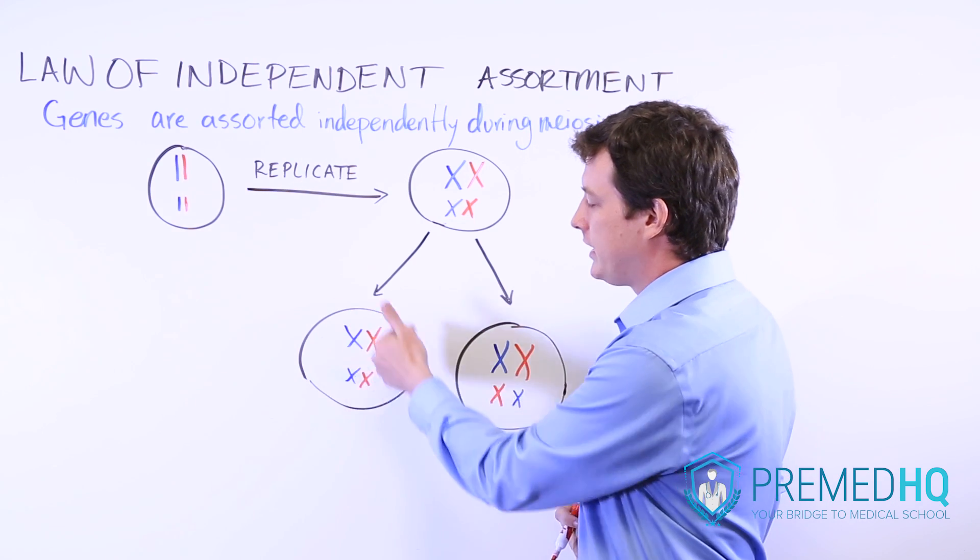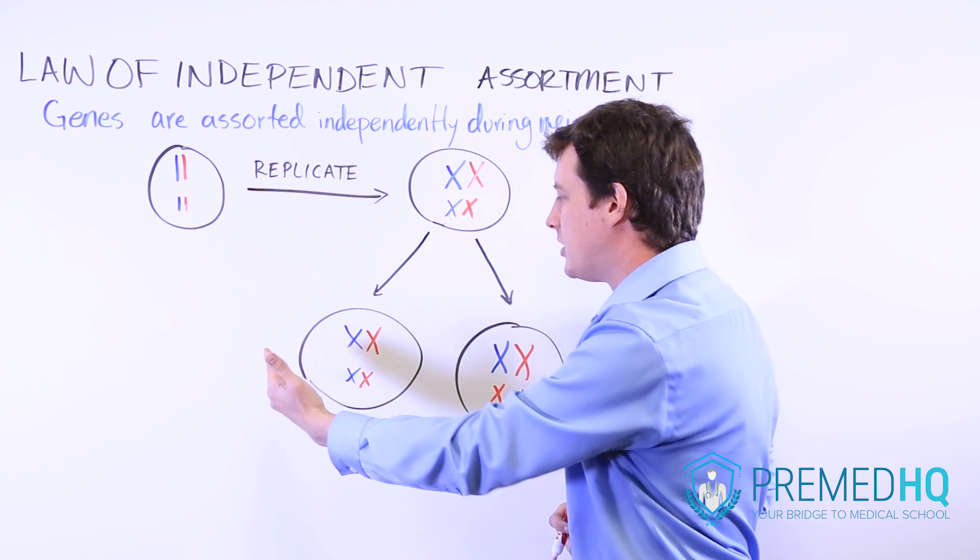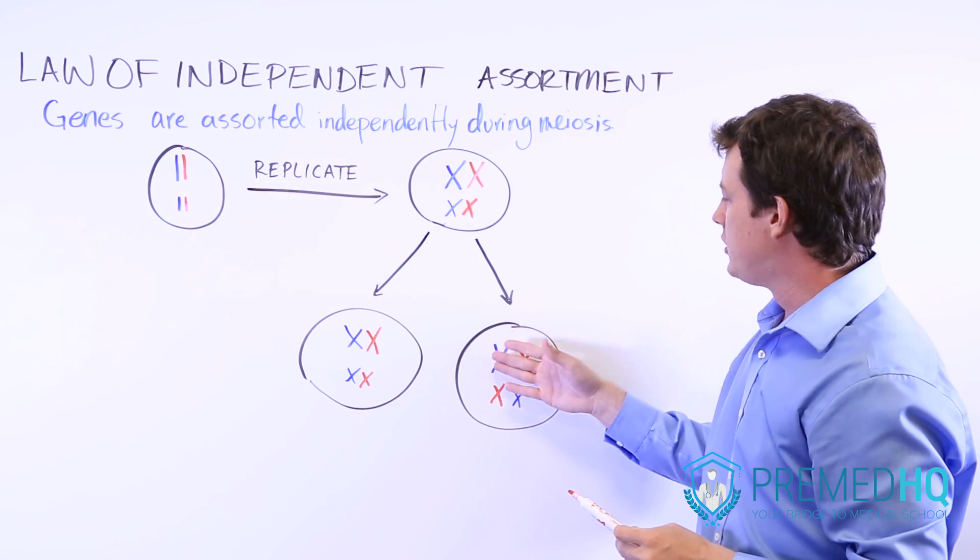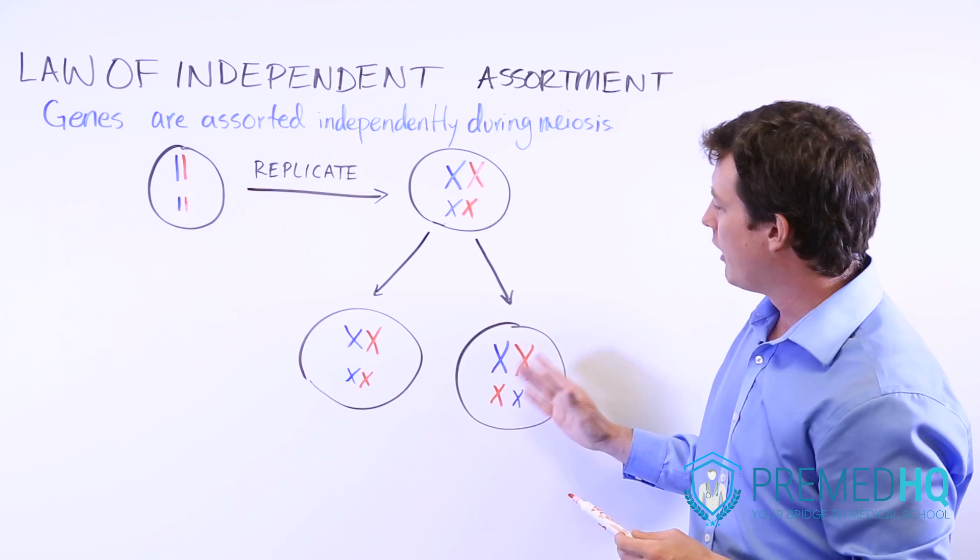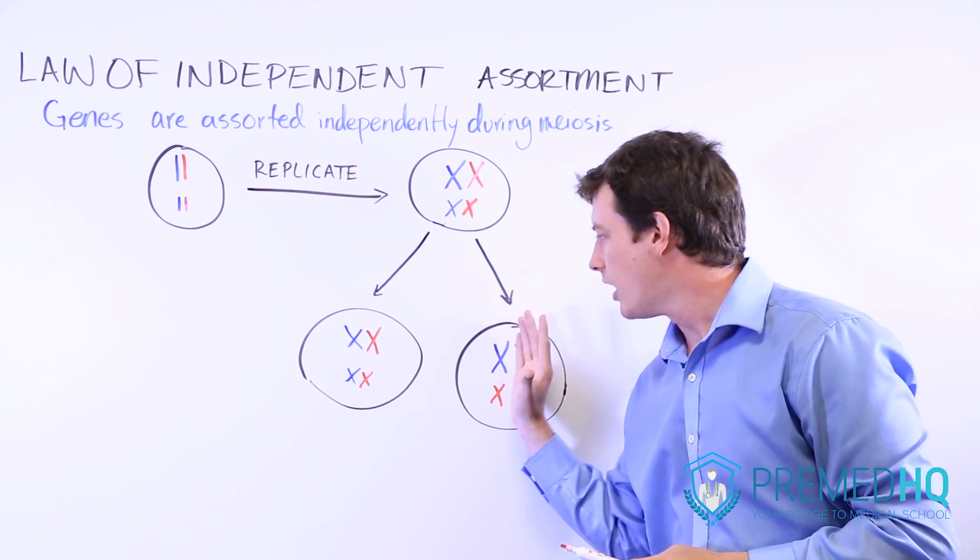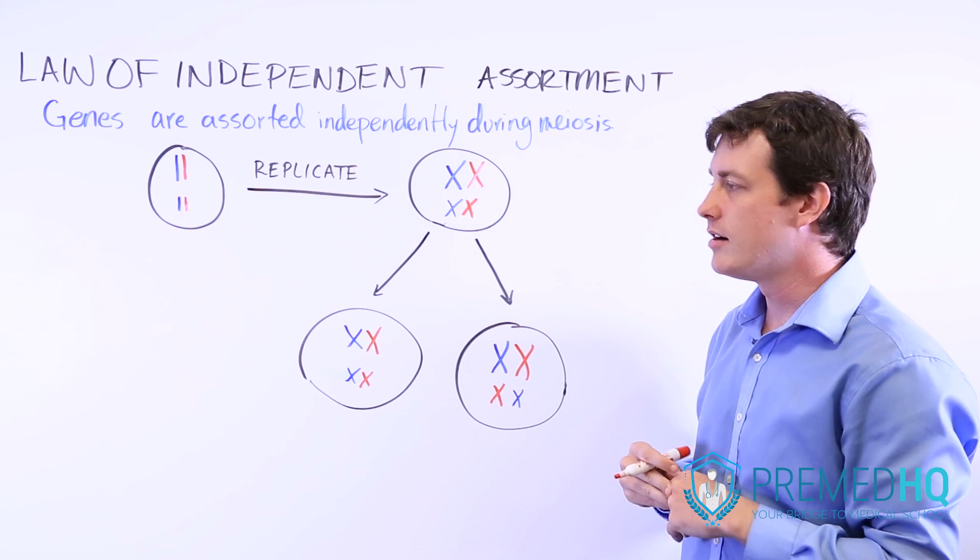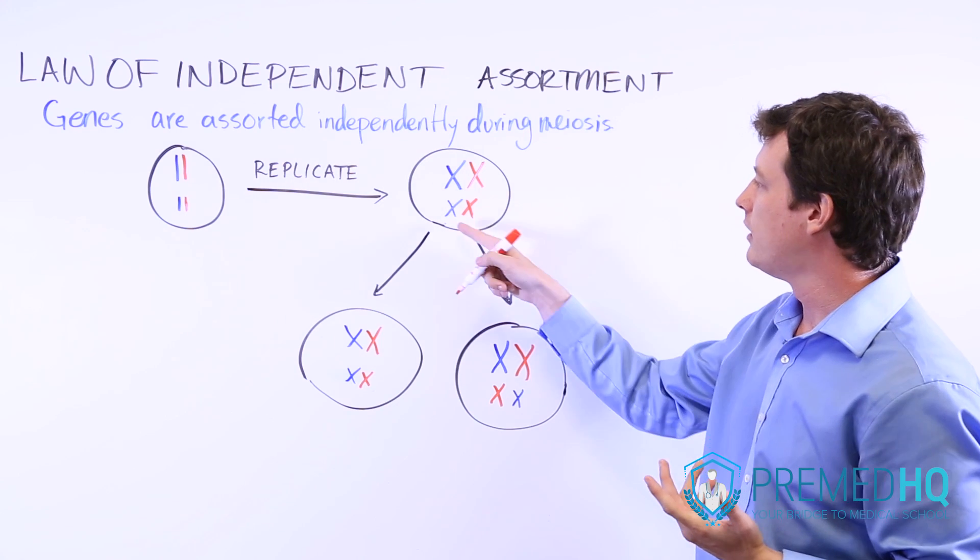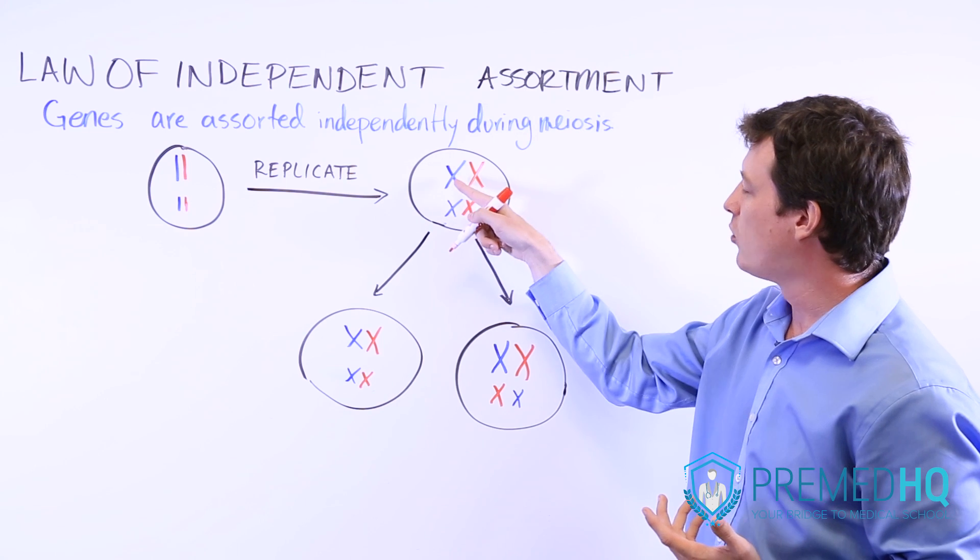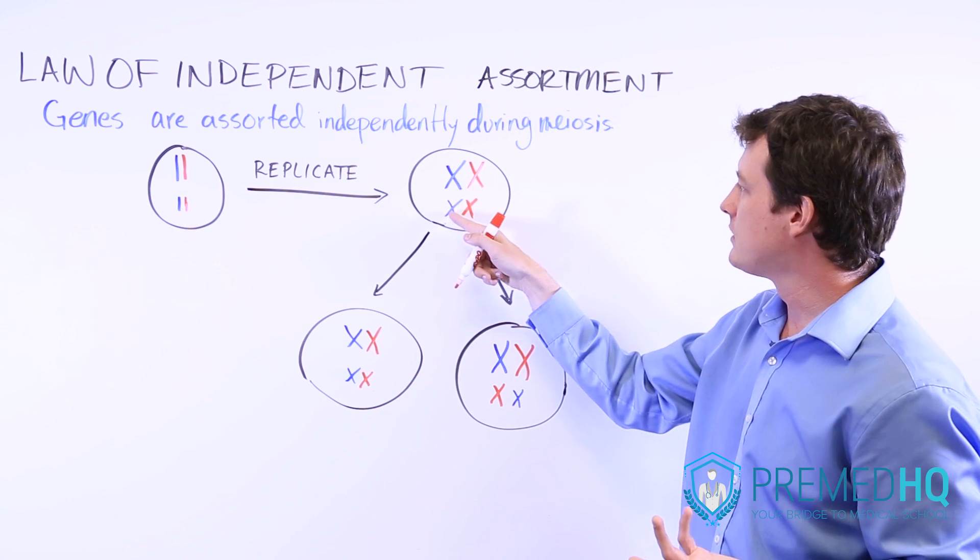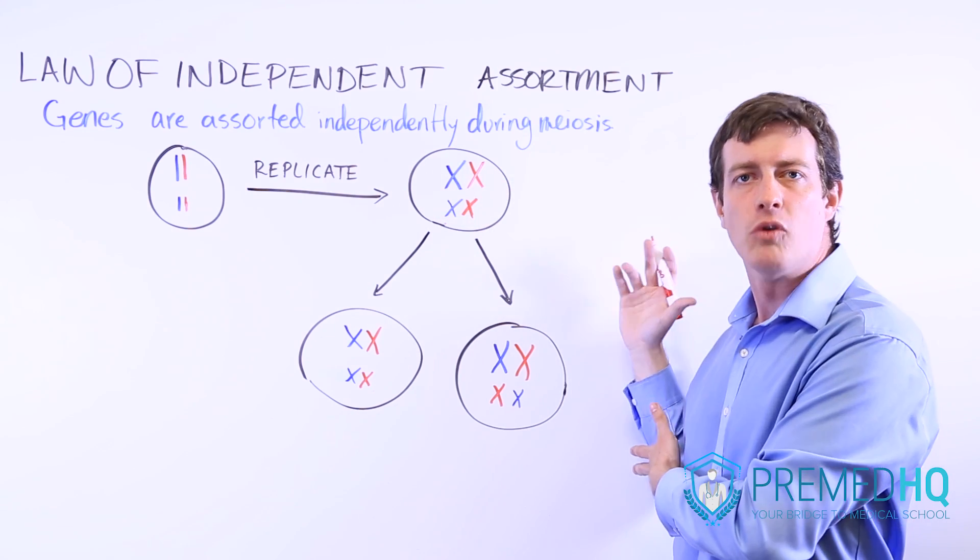Notice that they can line up so that the blue ones are both on one side and those will end up in the same daughter cell. Or just as likely we're going to see the blue and red line up here. And so you'll get one copy of the blue and one copy of the red over here. And what that means is that there's no greater likelihood that some blue gene over here will be acquired with the blue gene over here as it is that this blue gene would be acquired with one of the red genes over here.